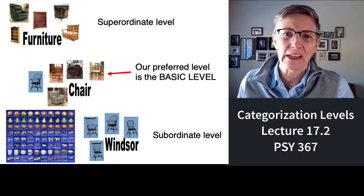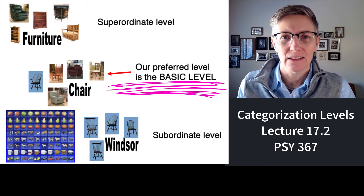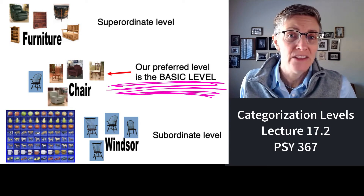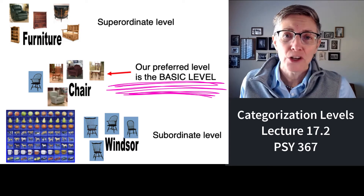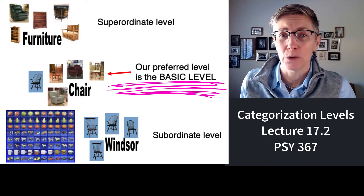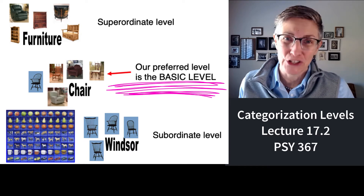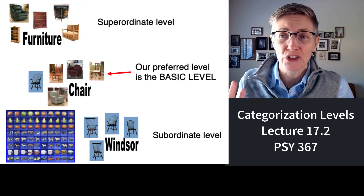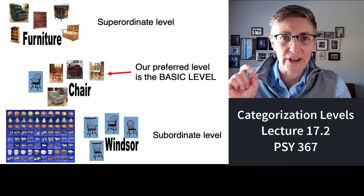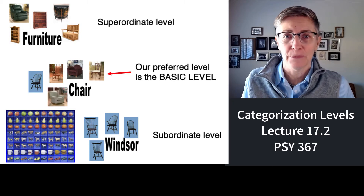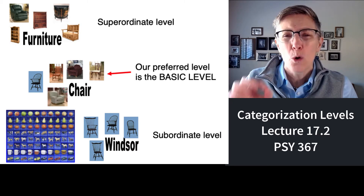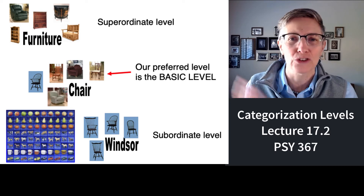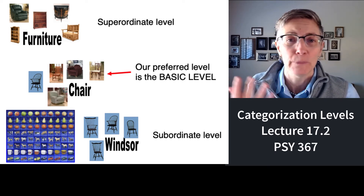Generally speaking, our preferred category is called the basic level category. For example, if I go into a restaurant with friends and they're missing a chair at a table, I don't ask for a piece of furniture and I don't ask for a Windsor chair — I ask for a chair. Chair is a preferred level of categorization. If I wanted to be more general, I could use the superordinate level, which would be furniture. Or if I was really picky, I could ask for a rocking chair, a Windsor chair, or a beanbag chair.